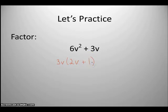Now if I want to check and see if that's correct, 3v times 2v will give me 6v squared. 3v times a positive 1 will give me a positive 3v. So my factorization was correct.